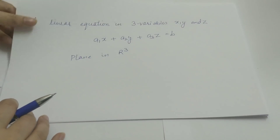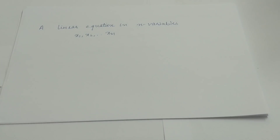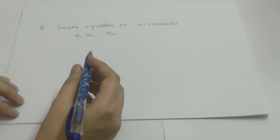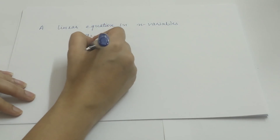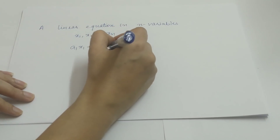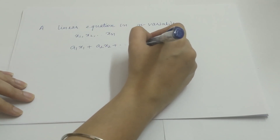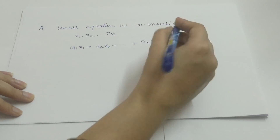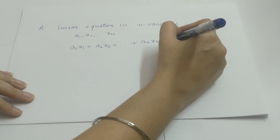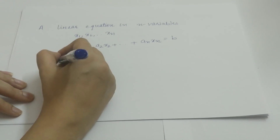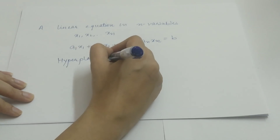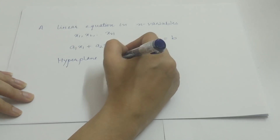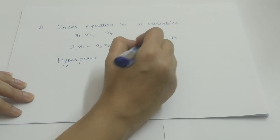Generalizing this, a linear equation in n variables x1, x2, ..., xn is of the form a1x1 + a2x2 + ... + anxn = b and it represents a hyperplane in Rn.